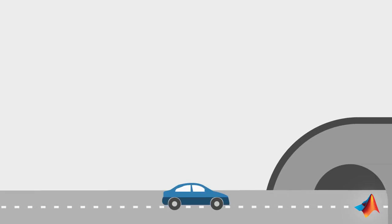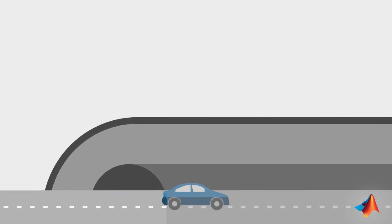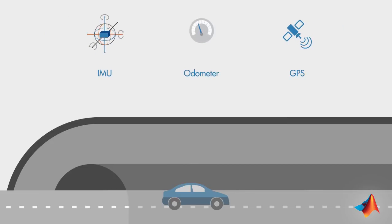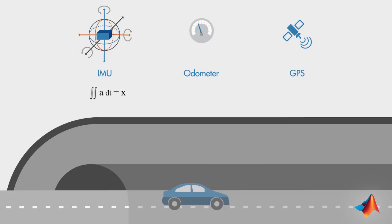If you live in Boston, you've got to travel through the Big Dig, a very long tunnel. In the tunnel, it gets harder to estimate your position through GPS since the receiver's line of sight to satellites is blocked and GPS signal is weak. In this case, you may want to trust the IMU readings, which give you the acceleration. However, acceleration itself doesn't tell you much about the car's position — for that, you need to take the double integral of the acceleration. Unfortunately, this operation is prone to drift due to small errors accumulating over time.